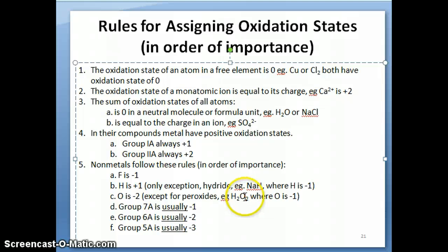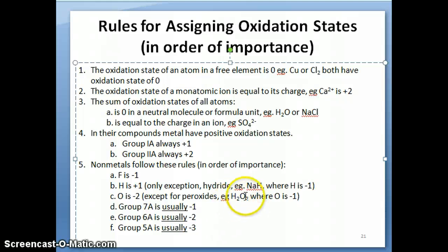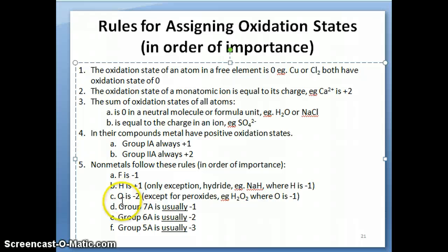Oxygen is always negative two. The exception is when oxygen is bonded as a peroxide, like hydrogen peroxide. In that case, both hydrogens are plus one because the rule for hydrogen precedes the rule for oxygen. So the two hydrogens give plus two, and since hydrogen peroxide is neutral, the two oxygens together must be negative two, meaning each oxygen is negative one. After oxygen, Group 7A halogens are usually negative one, Group 6A is usually negative two, and Group 5A is usually negative three.